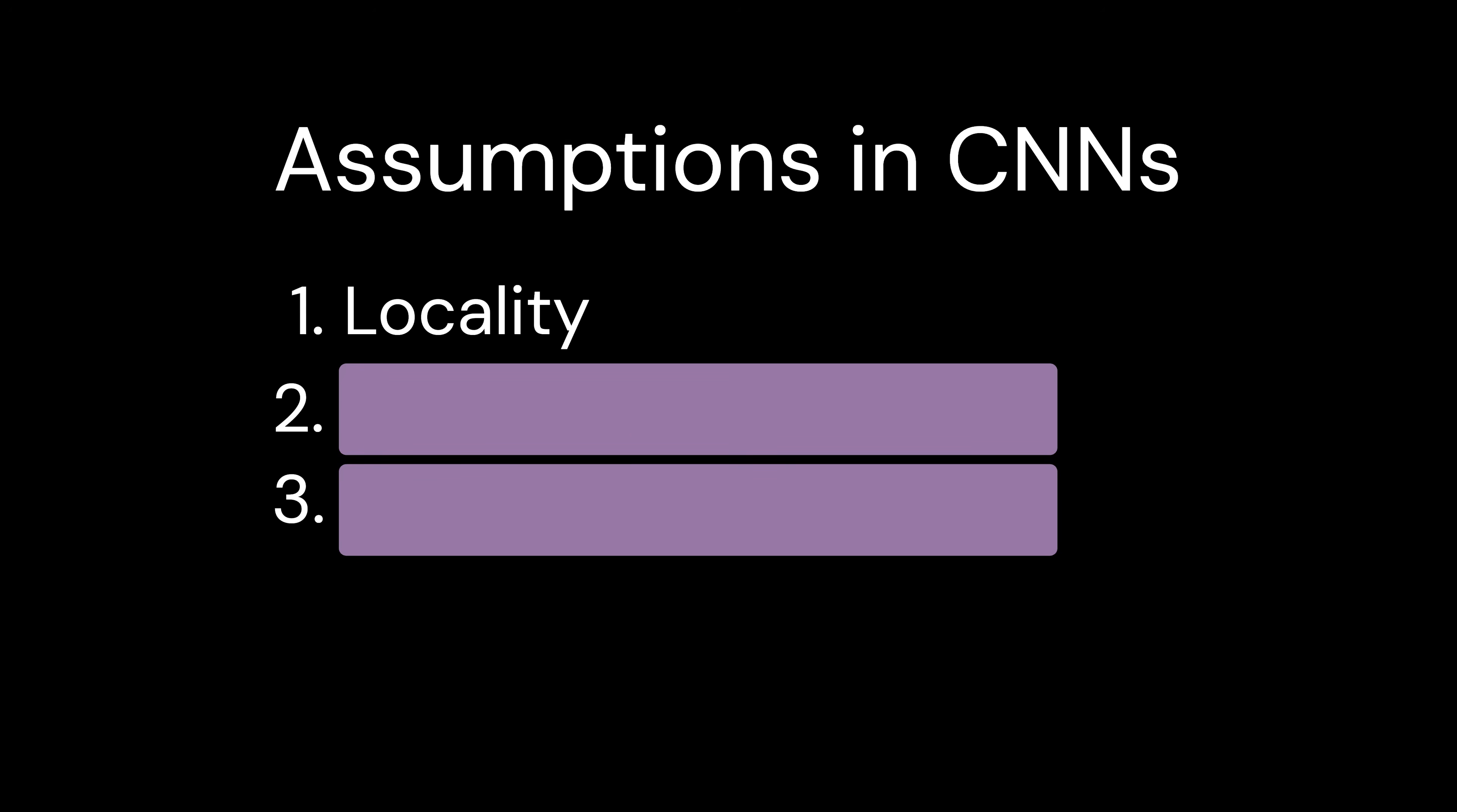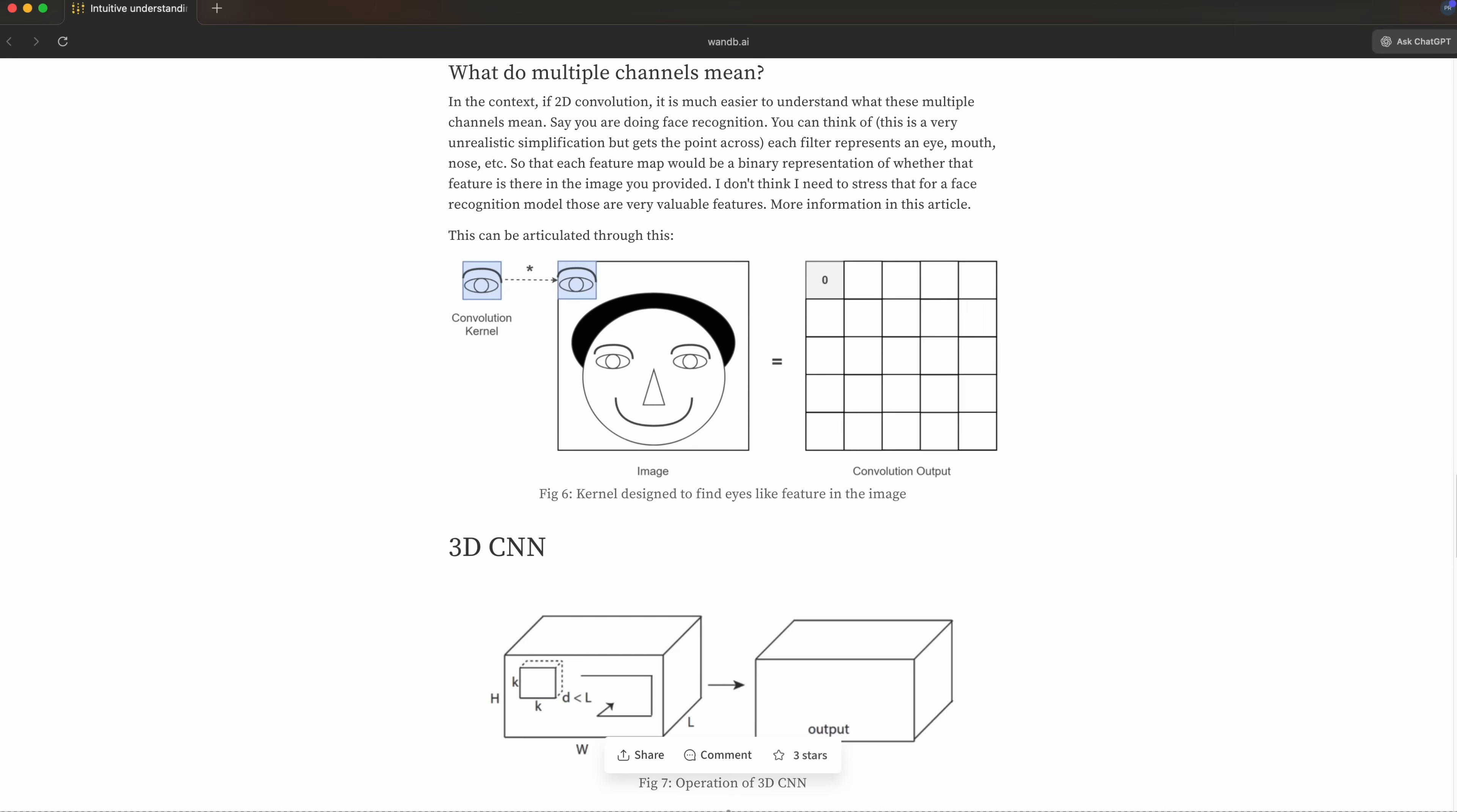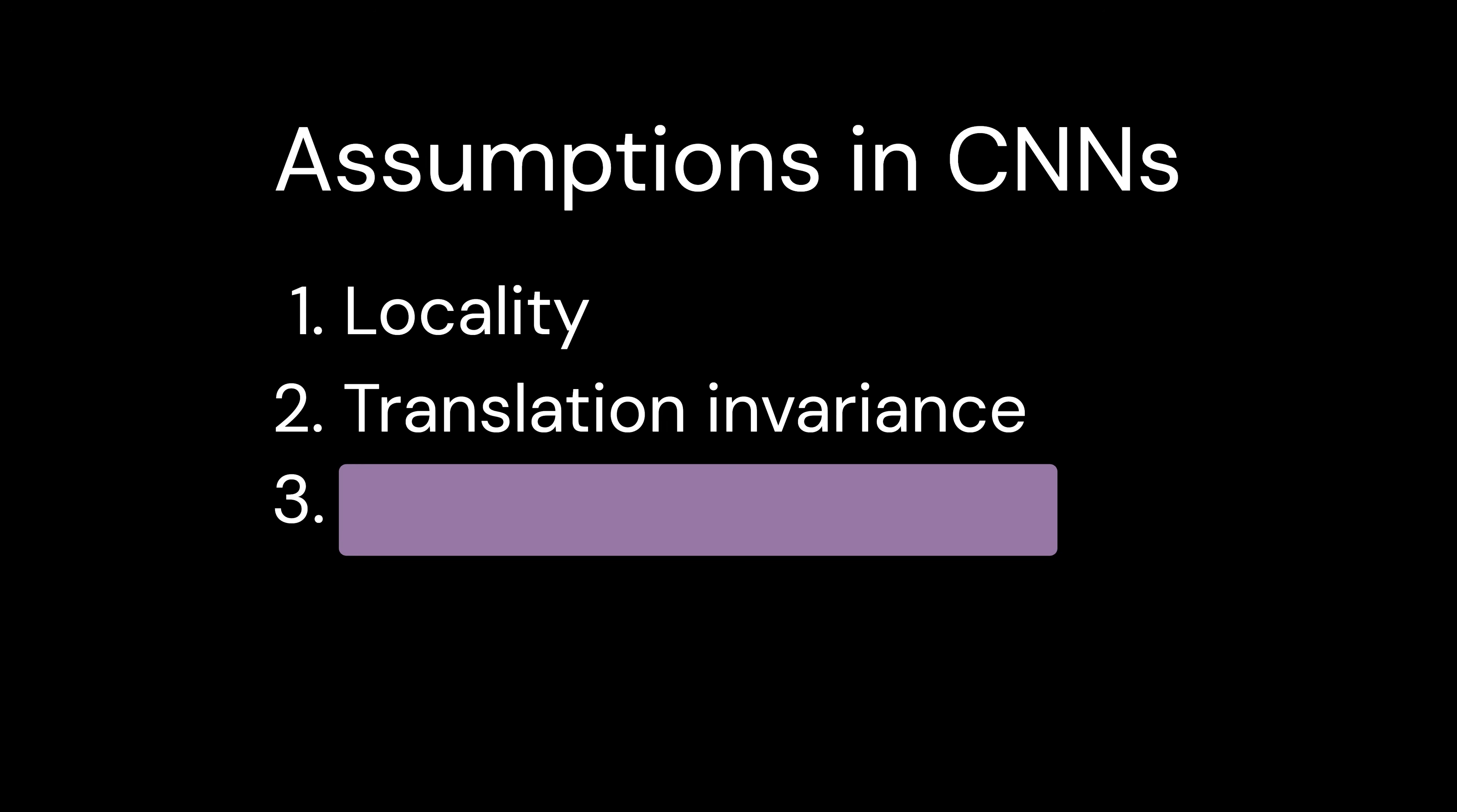The second assumption made by CNNs is translation invariance. It sounds very pretentious, but it's simple. Consider a kernel that detects eyes. When it slides over the entire image, it basically looks for the same visual element everywhere. This is a way of acknowledging that objects can be present at any location.